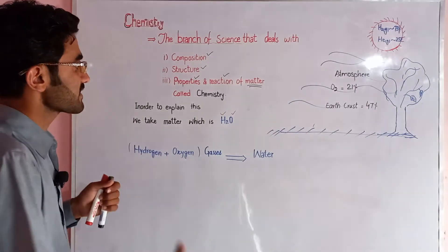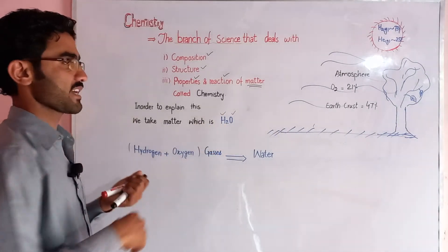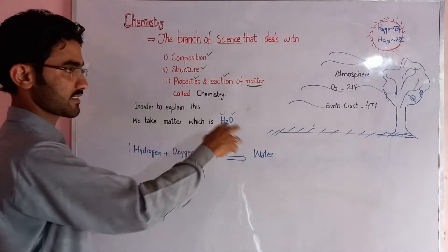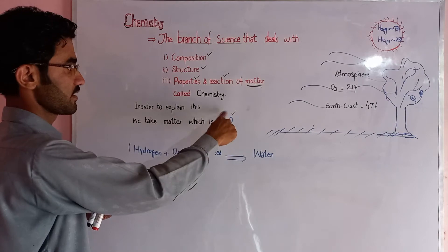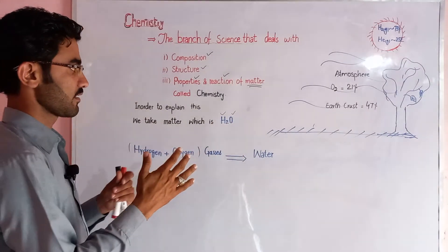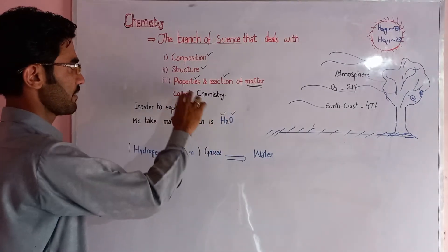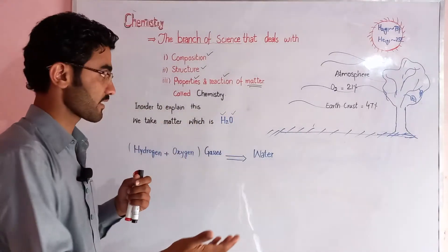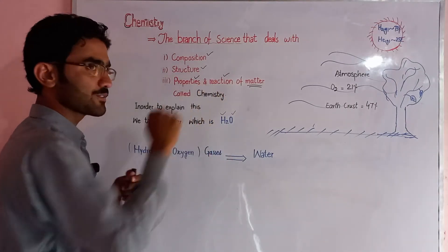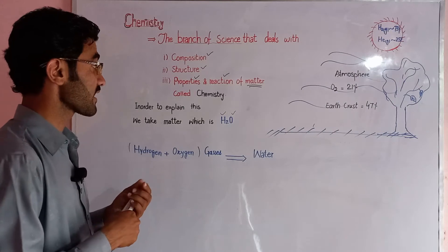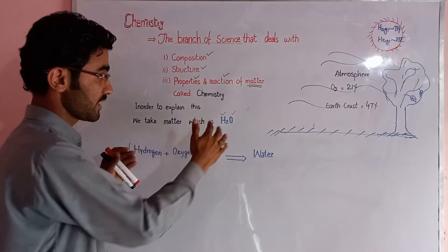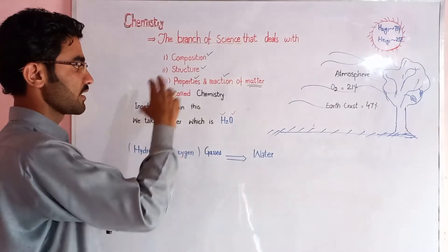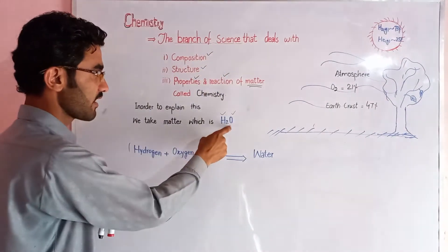اس کے بعد H2O کی structure کو دیکھتے ہیں — وہ later on discuss کریں گے۔ Structure ہمیں بتاتی ہے کہ ان کی آپس میں کیا chemical condition یا ratio ہے۔ اب اس matter کے individual parts — hydrogen اور oxygen — کی properties کو discuss کرنا ہے۔ پھر ان matters کے آپس میں reaction کا مطالعہ کیا جائے گا — یہ سب اس matter کی chemistry کہلاتا ہے۔